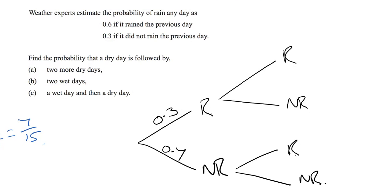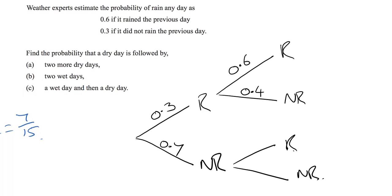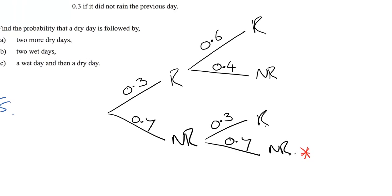If it did rain, the new chance of it raining is 0.6, which means not raining is 0.4 — these two must add up to one. If it didn't rain on the previous day, the probability of rain is 0.3, making not-rain 0.7. So the second set of branches reflects the changed probabilities based on what happened the day before. Two more dry days means not-raining followed by not-raining.